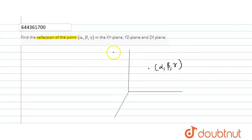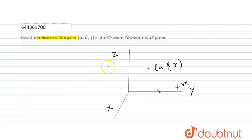This is the Z axis, this is the Y axis, and this is the X axis. The opposite of positive Y is negative Y, the opposite of positive Z is negative Z pointing downwards, and the opposite of positive X is negative X going inside the plane.